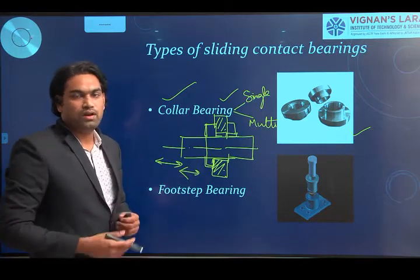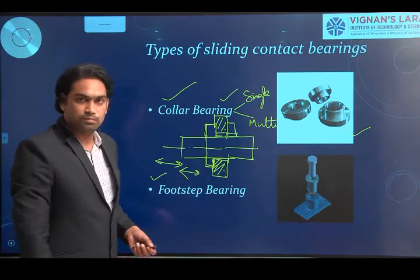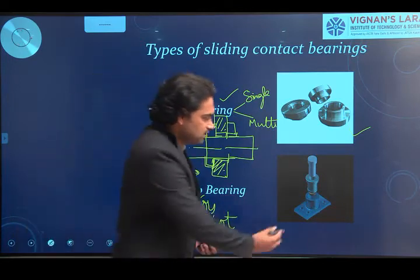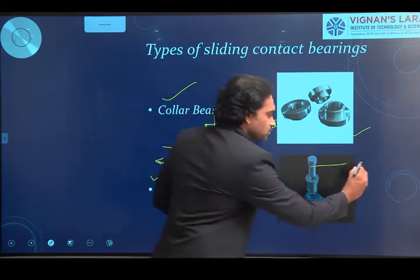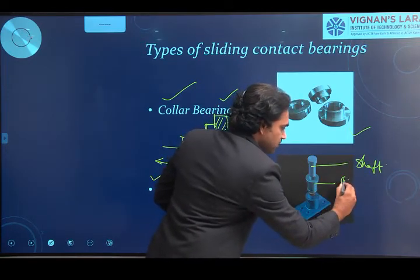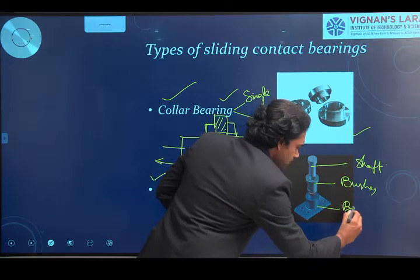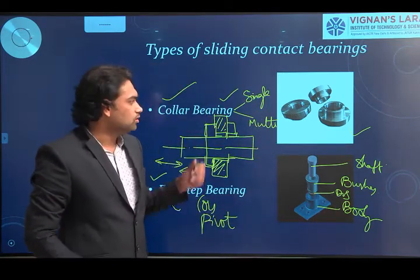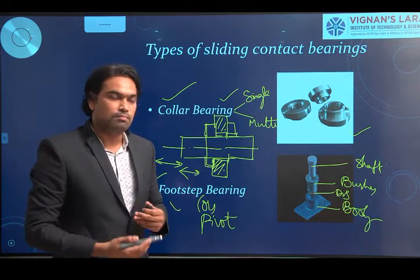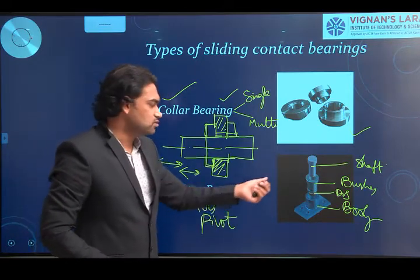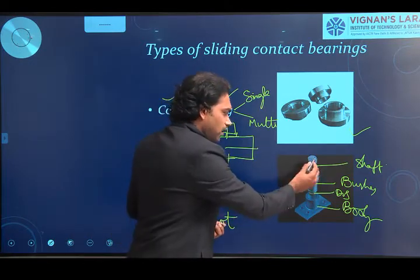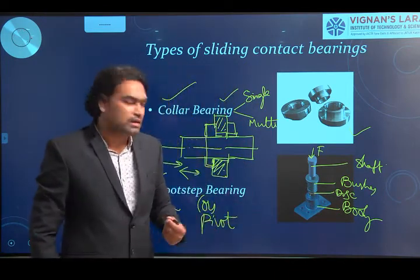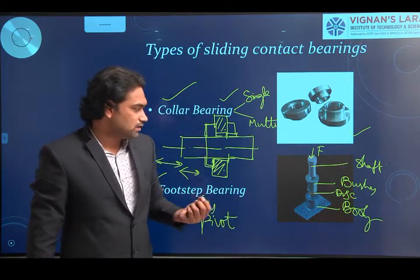The collar bearing is mainly used for horizontal type of shafts. Coming to the footstep bearing (also called pivot bearing): here the shaft ends inside the bearing — unlike previous cases where the shaft passes through. To resist the force acting on the shaft, a disc is placed inside the body and fixed by means of a snug. The shaft is accommodated within the body together with bushes and the disc.